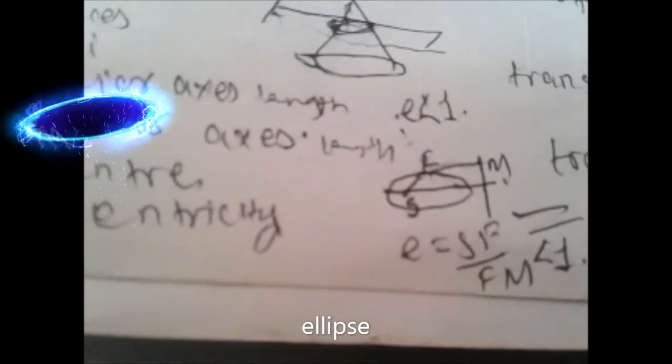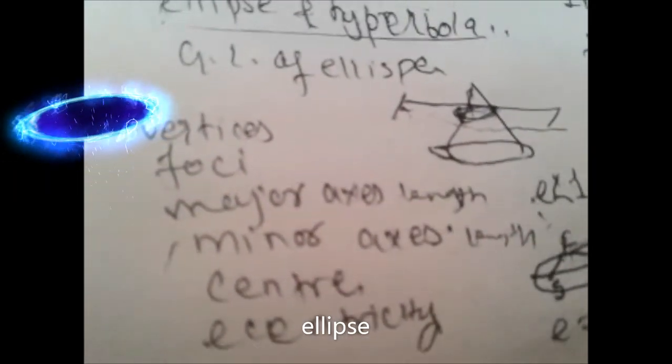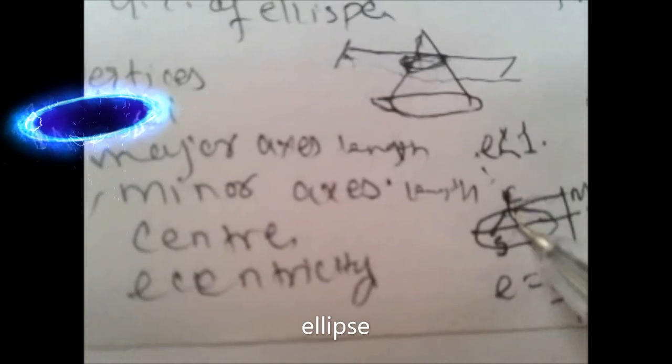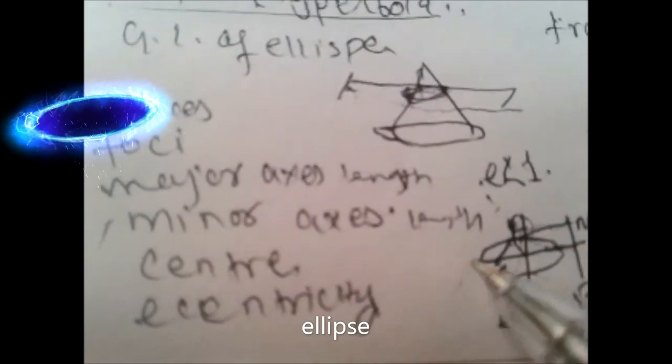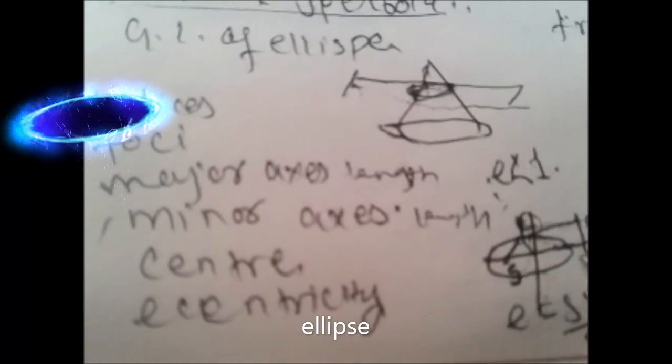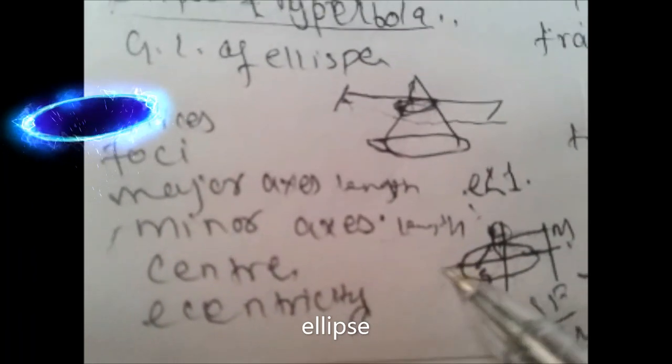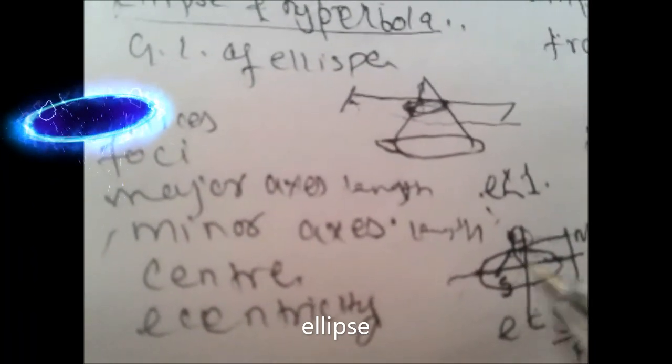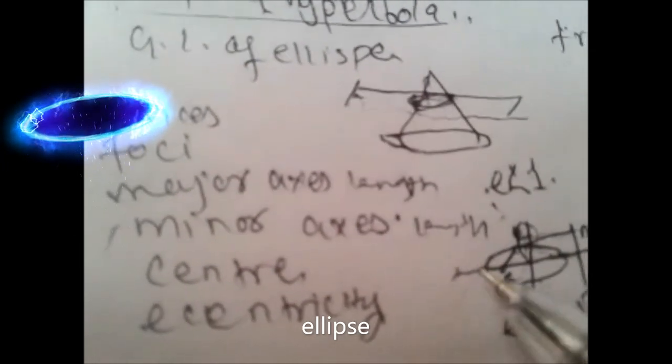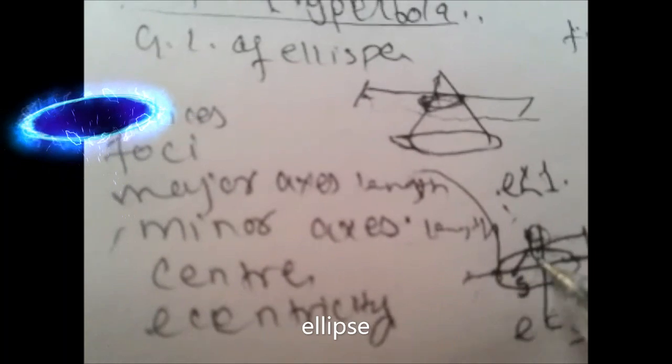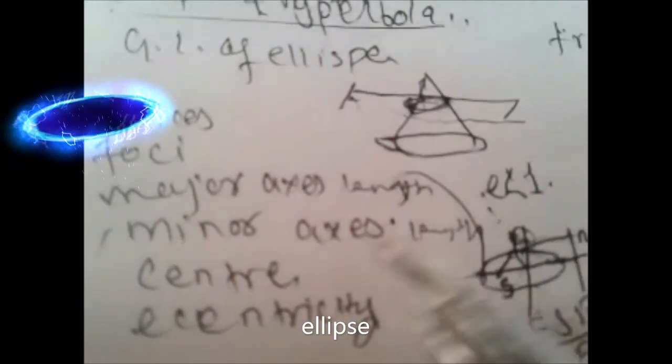If this is an ellipse, then these are vertices, and the axis passing through the vertices is the major axis. Perpendicular to it is the minor axis.